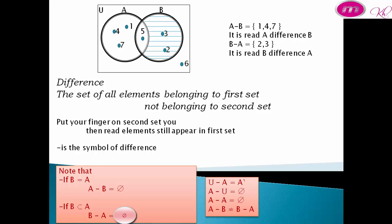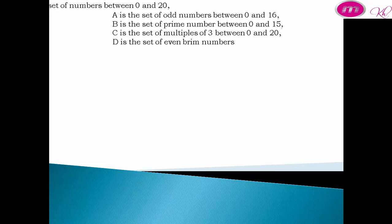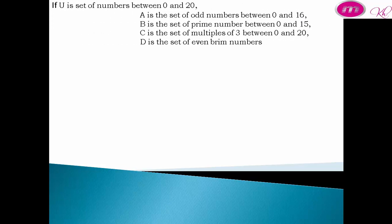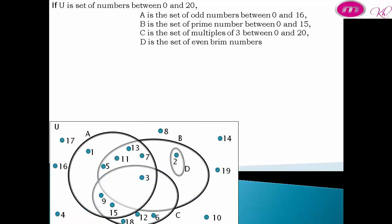Note that A difference B does not equal B difference A. Practice problem: A is the set of odd numbers between 0 and 20. B is the set of prime numbers between 0 and 15. C is the set of multiples of 3 between 0 and 20. D is the set of even prime numbers. We draw the Venn diagram of these four sets, then find various results.